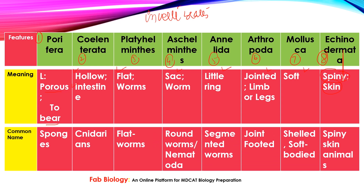If we look at the common names: Porifera are called Sponges. Coelenterates are called Cnidarians. Platyhelminthes are commonly called Flatworms. Aschelminthes are called Roundworms or Nematodes. Annelida are Segmented Worms. Arthropoda are Jointed-limb animals. Mollusca are Shelled and Soft Body Animals. Echinodermata are commonly called Spiny Skin Animals. So we have covered two points: meanings and common names.